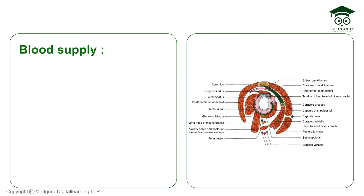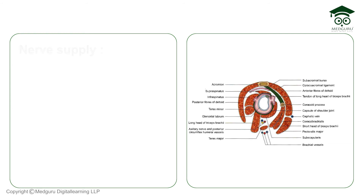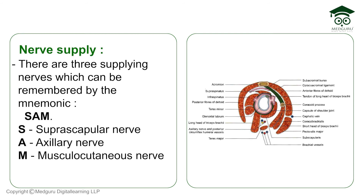Now let's talk about blood supply. There are four vessels — two from the scapula and two from the humerus. The scapular vessels are the suprascapular and subscapular vessels. The humeral vessels are the anterior circumflex humeral and posterior circumflex humeral vessels. For nerve supply, there are three nerves — remember the mnemonic SAM: suprascapular nerve, axillary nerve, and musculocutaneous nerve.